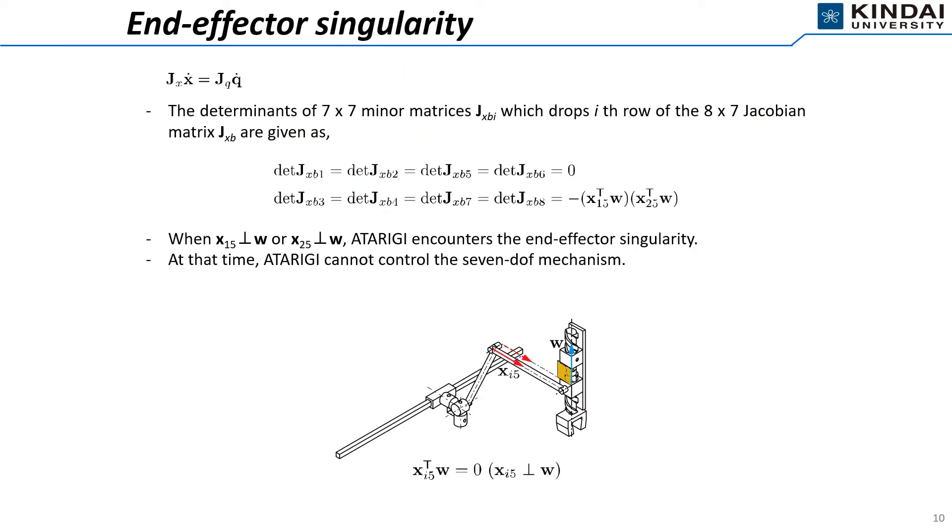Next, I will show you the singularity analysis of the end-effector side of Atarigi. The determinants of 7 by 7 minor matrix JxBi, which drops i-th row of the 8 by 7 matrix JxB, are given as these equations. When the unit direction vector xI5 of the distal arm is perpendicular to the unit direction vector W of the moving path, as shown in the bottom figure, Atarigi encounters the end-effector singularity. At that time, Atarigi cannot control the 7-DOF mechanism. This singular pose must be avoided during the mode changes.